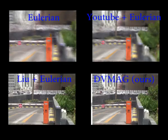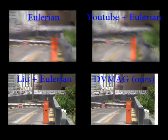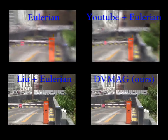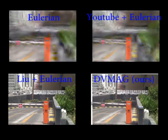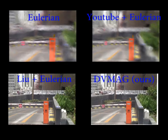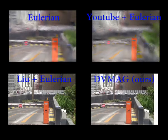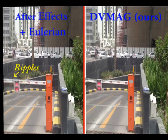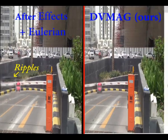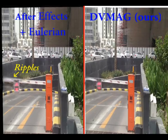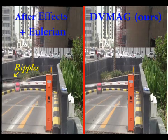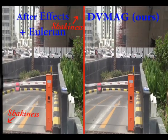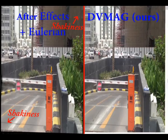Euler magnification generates very blurry results. YouTube stabilization with Euler also generates blurry results. Low motion compensation plus Euler magnification does not amplify motions of interest. After Effects stabilization followed by Euler magnification generates artifacts around the region of interest and also magnifies stabilization errors.